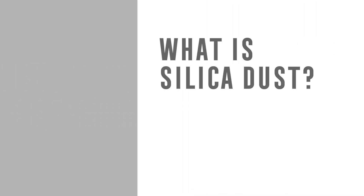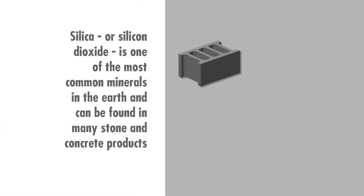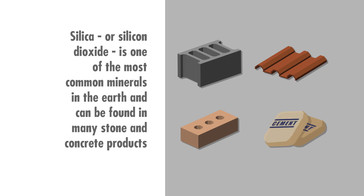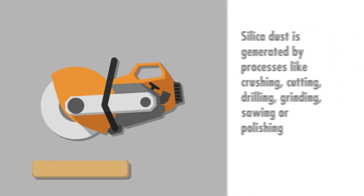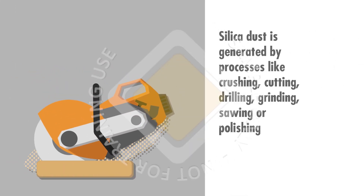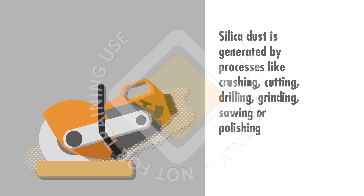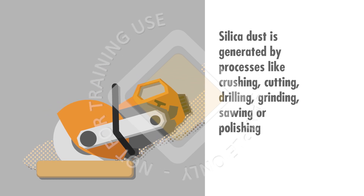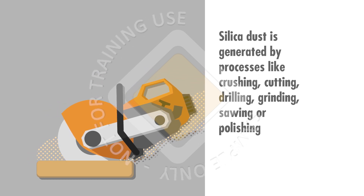What is silica dust? Silica, or silicon dioxide, is one of the most common minerals in the earth and can be found in many stone and concrete products. Silica dust is generated by processes like crushing, cutting, drilling, grinding, sawing or polishing.